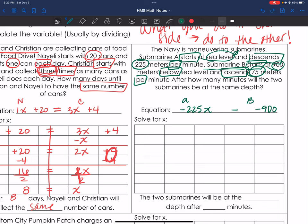And ascends going up 75 meters per minute. So that's plus 75. 75 per minute. After how many minutes will the two submarines be at the same depth? So my sign, again, is an equal sign. Cool.